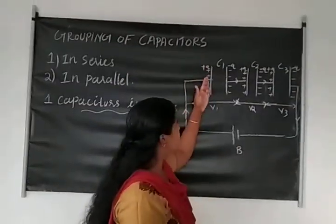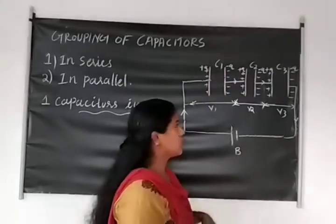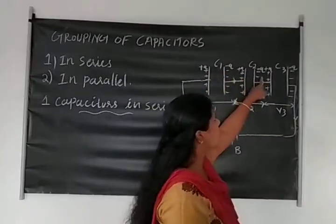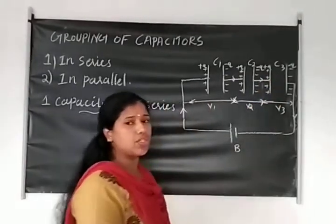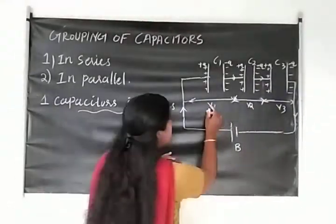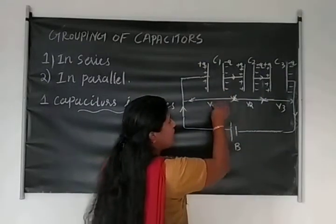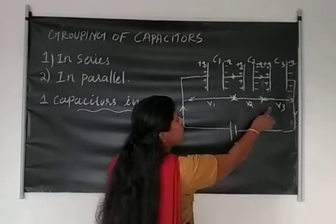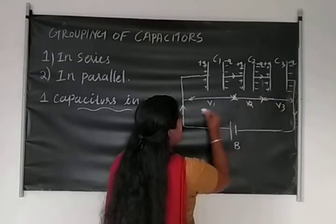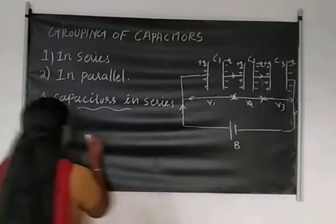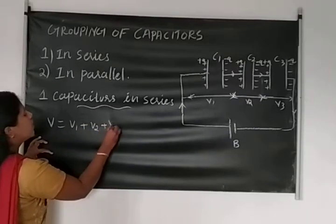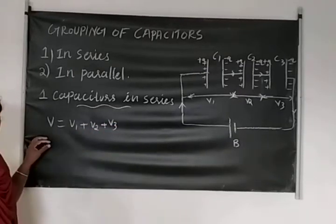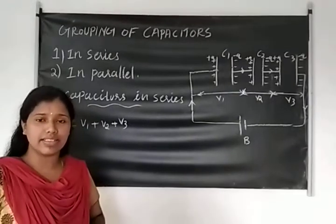In the capacitor, we know that one side has plus Q charge and one side has minus Q charge. Here also plus Q and minus Q for each capacitor. Then we know that the total voltage — voltage across C1, voltage across C2, voltage across C3 — gives us total voltage V.